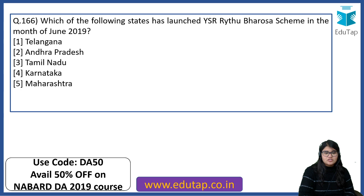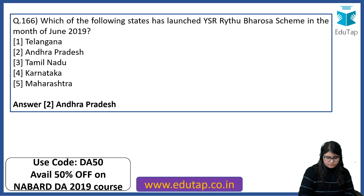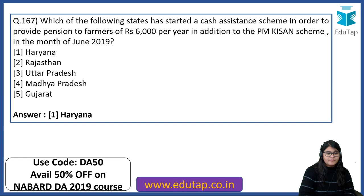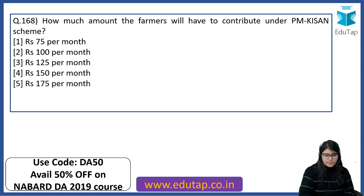Which state launched the YSR Raitu Bharosa scheme in June 2019? The answer is Andhra Pradesh. Which state started a cash assistance scheme providing pension to farmers of Rs. 6000 per year in addition to the PM Kisan scheme in June 2019? The answer is Haryana. How much must farmers contribute under PM Kisan Mandhan Yojana? It is Rs. 100 per month.